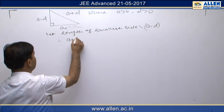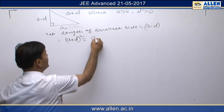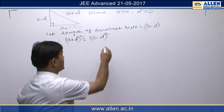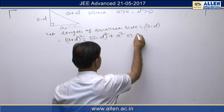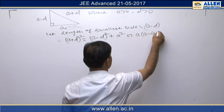From there we can use (a + d)² = (a - d)² + a². On solving this relation, we get a(a - 4d) = 0.